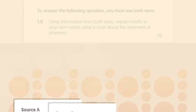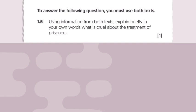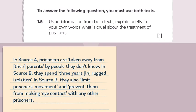Now, let's take a look at an example question in full and think about how you'd begin to produce an answer. This question asks, using information from both texts, explain briefly in your own words what is cruel about the treatment of prisoners. A full response might go something like this.